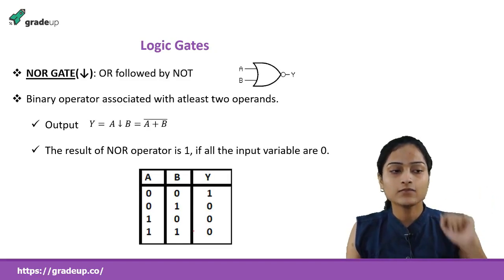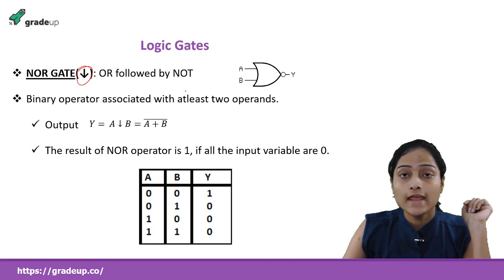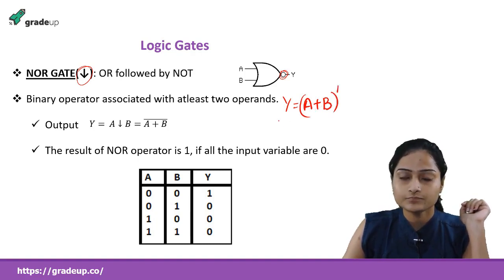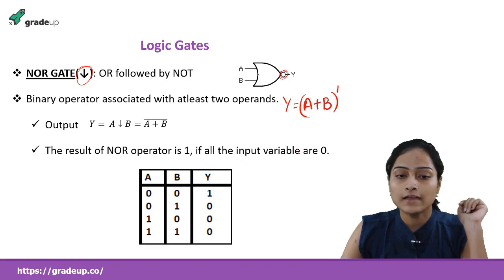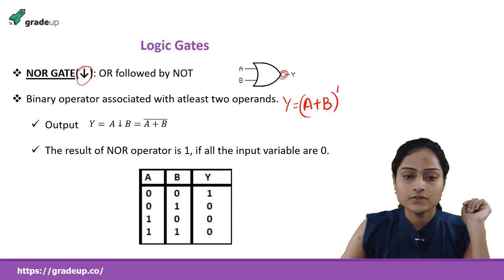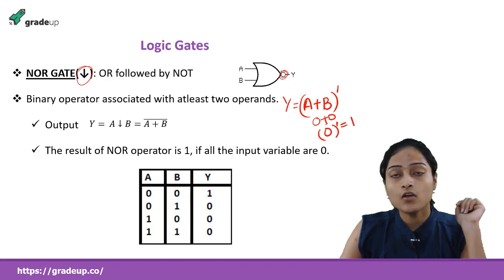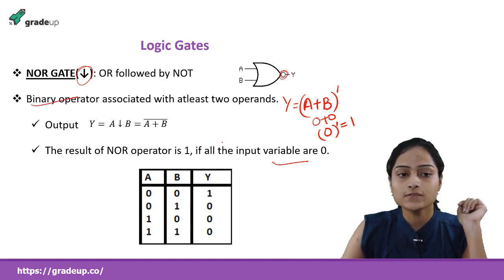The NOR gate is represented by a downward arrow. As the name suggests, it is OR followed by NOT — derived using the OR gate and then NOT. For OR gate the equation was A + B, and applying NOT gives the NOR equation. In OR gate you get output 1 if any one input is 1, but in NOR gate you get output 1 only if all the inputs are 0. For example, 0 + 0 = 0, and the complement of 0 is 1. NOR is also a binary operator.